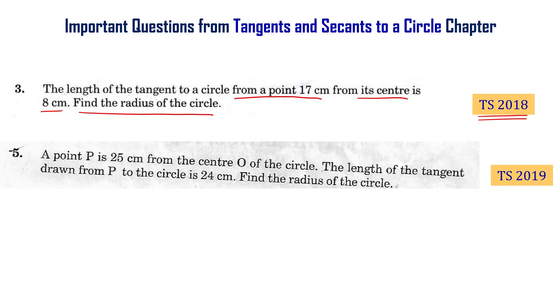A point P is 25 centimeters from the center O of the circle. The length of the tangent drawn from P to the circle is 24 centimeters. Find the radius of the circle.